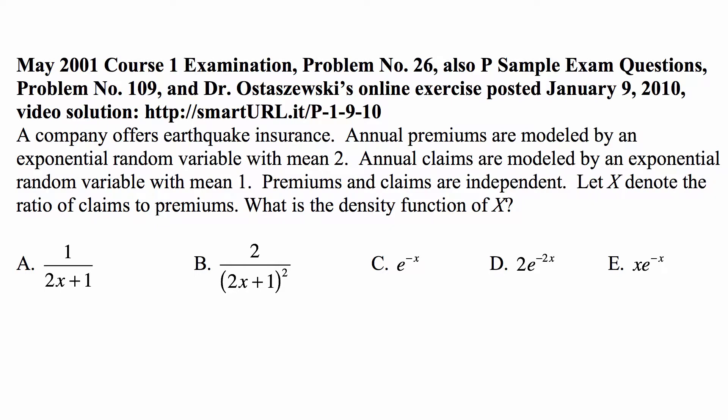This is a problem for exam P on probability. A company offers earthquake insurance. Annual premiums are modeled by an exponential random variable with mean 2. Annual claims are modeled by an exponential random variable with mean 1. Premiums and claims are independent. Let x denote the ratio of claims to premiums. What is the density function of x?